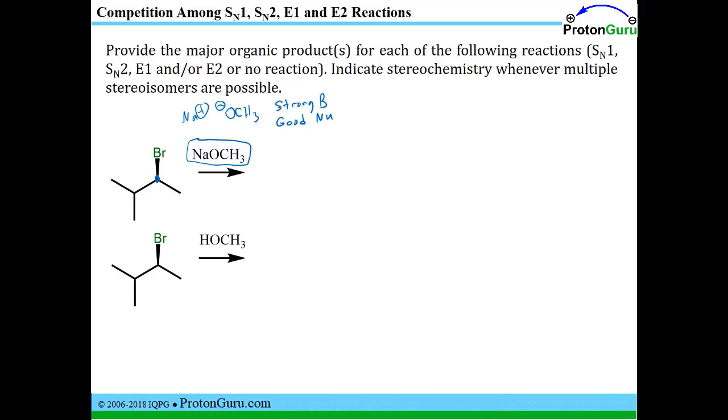Strong base being present means we can do an E2 reaction. A good nucleophile being present means that we can do an SN2 reaction. The fact that the substrate is secondary indicates that the substrate is also viable for both SN2 and E2 pathways. So how do we decide which of these two reaction pathways will predominate in this case?